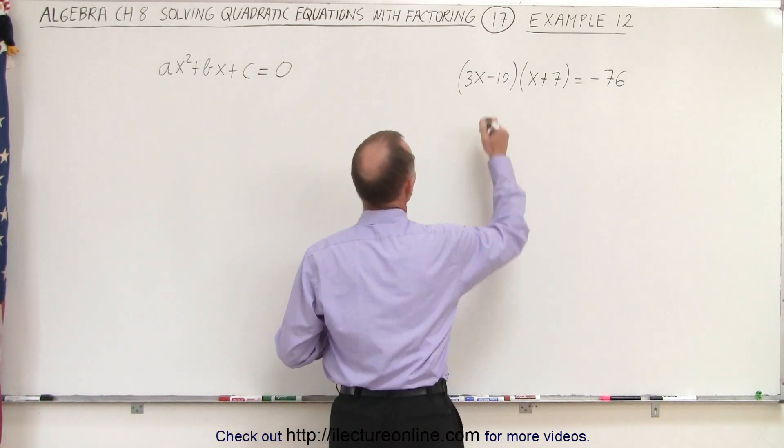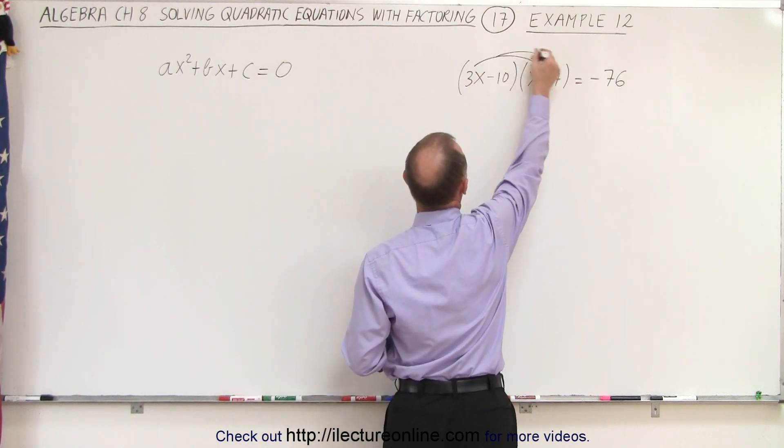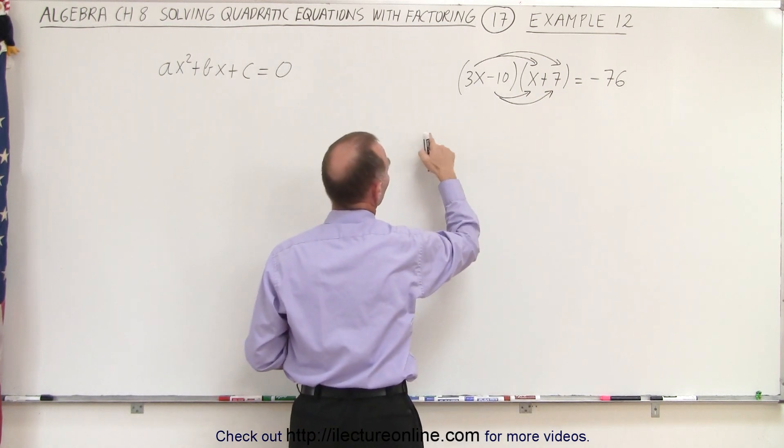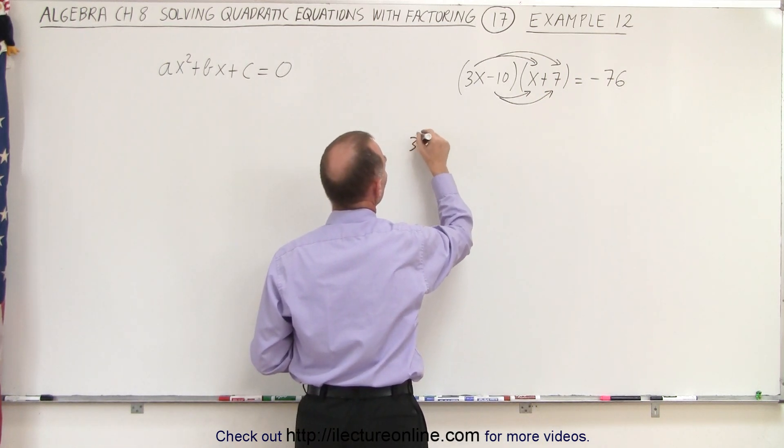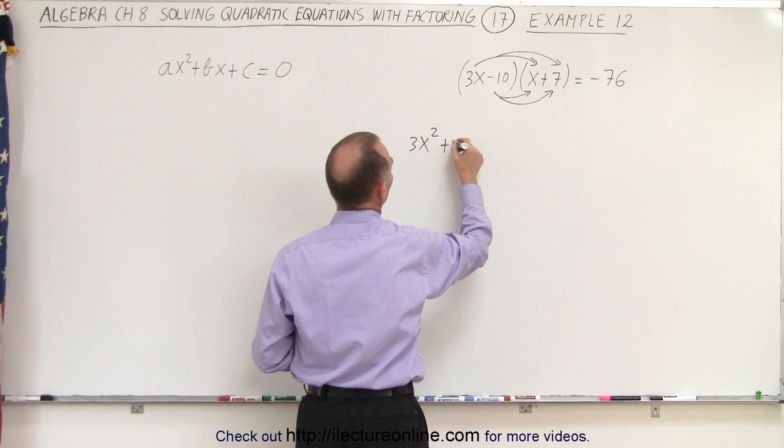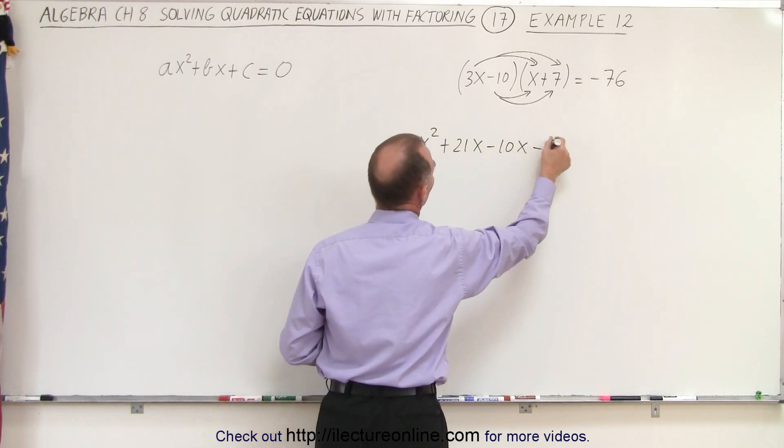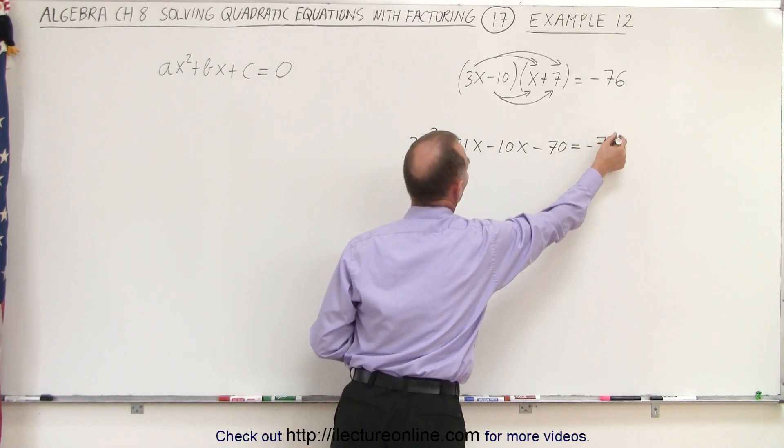So first, we're going to multiply the 3x times the x and the 7, and then we're going to multiply the negative 10 with the x and the 7. So on the left side, we end up with 3x squared plus 21x minus 10x and minus 70 equals minus 76.